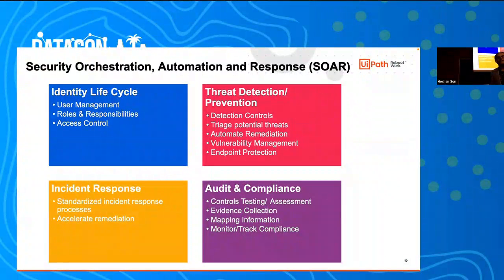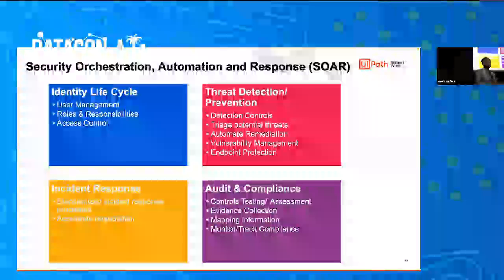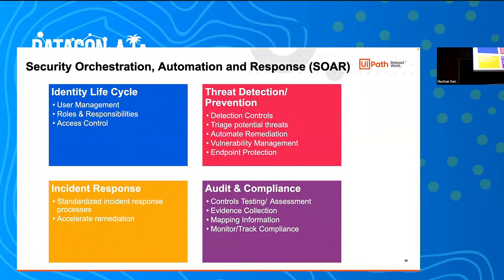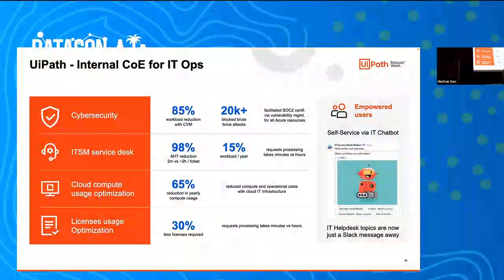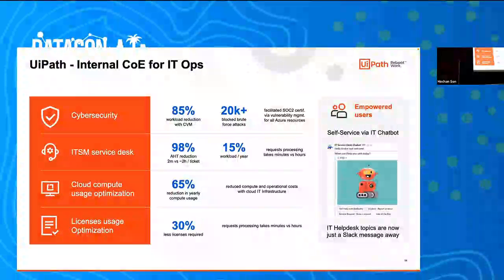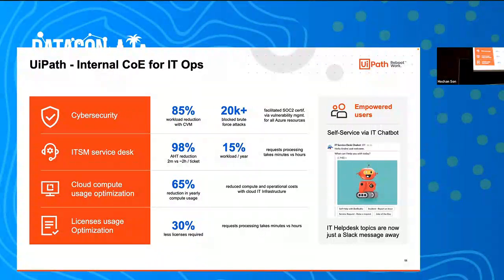Last but not least, there's incident response: there are always standard response activities, be it blocking a certain subnet, notification processes, or identifying compromised users in your systems. These standard activities you do as part of incident response can be automated. These are some of the numbers from our internal operations itself — we are currently working with 10,000 clients globally across all industries. These are some of the use cases I thought I'd share from a data and security perspective on how automation is complementing any existing platforms you are using on the ground.